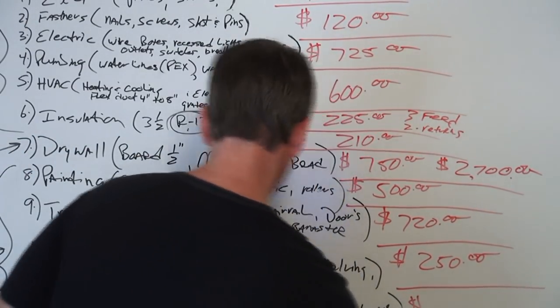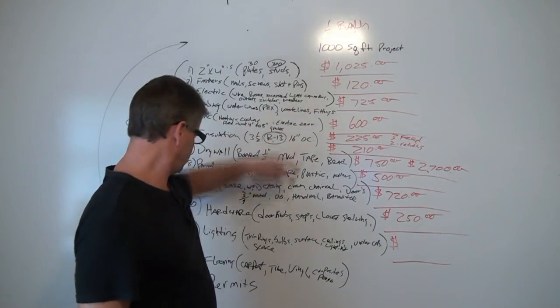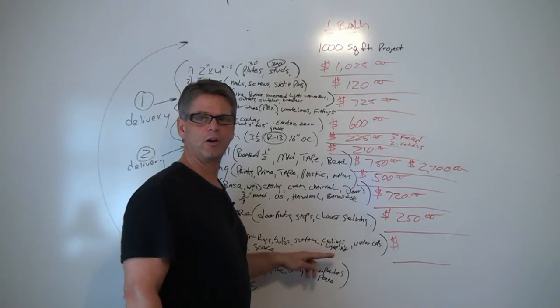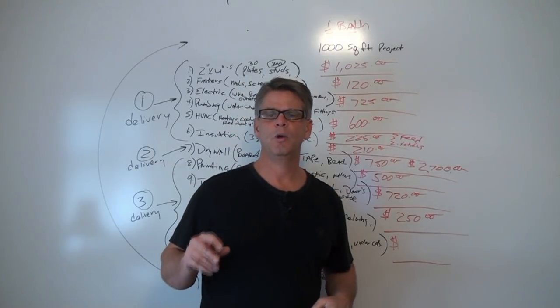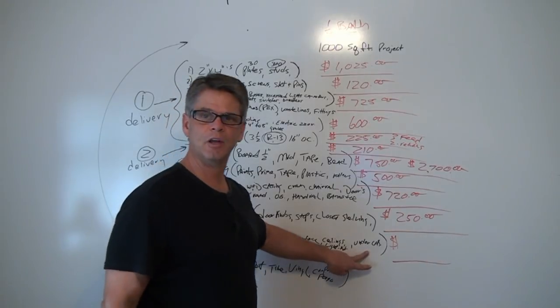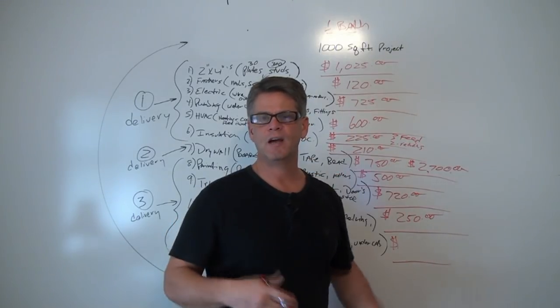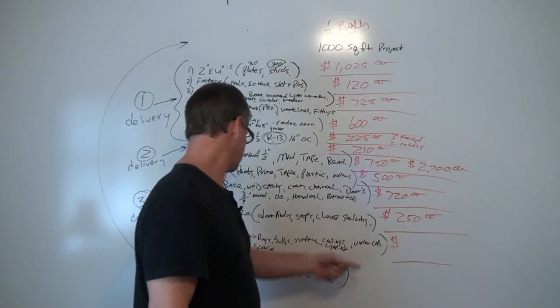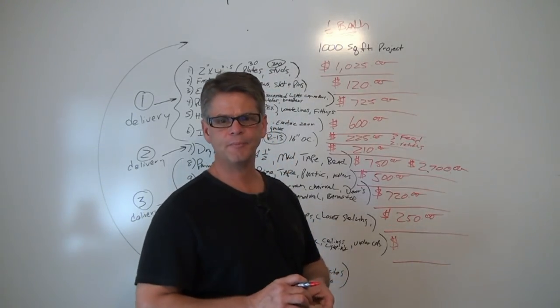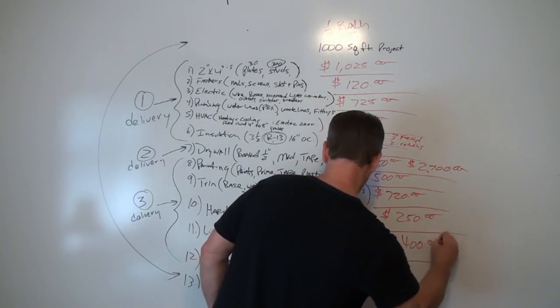Next, we got lighting. Lighting is our trim rings that went with our recessed light cans that we got in the electric order. We've got bulbs, surface fixtures. I figured one ceiling fan with a light kit. I also did not figure in any under cabinet lighting or any sconce lighting because, again, this is a bare bones basement. We don't have a bar going in here. For all the lighting for this project, we got $400.